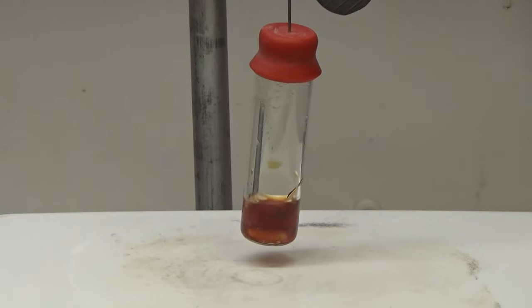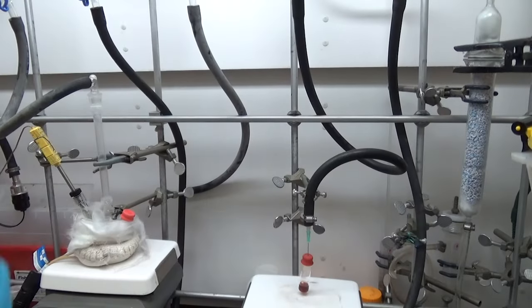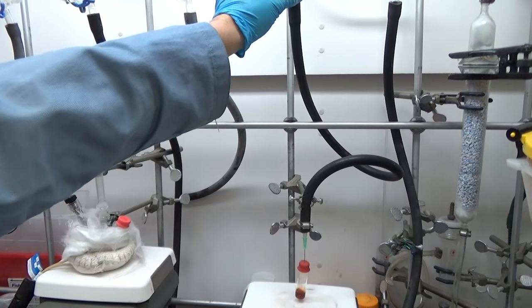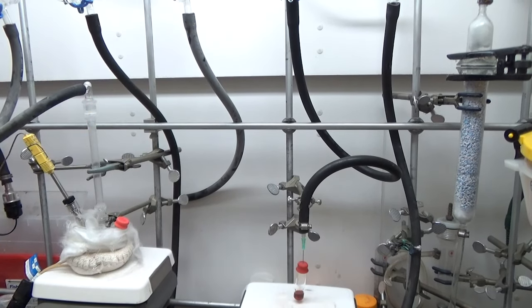As we heat it up and stir, the sulfur dissolves and you can see it get darker and darker. And as we pull vacuum, you can just tell visually when it's done degassing.